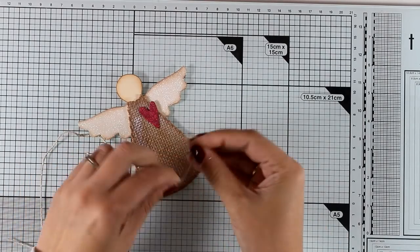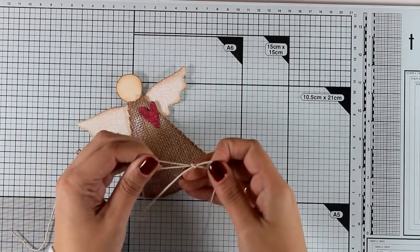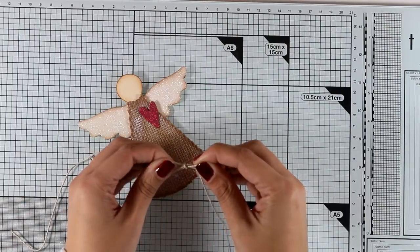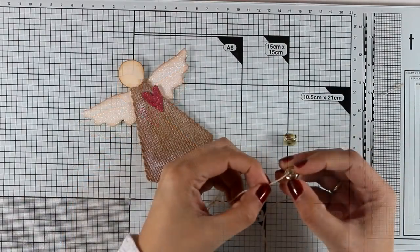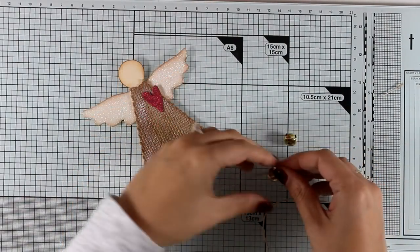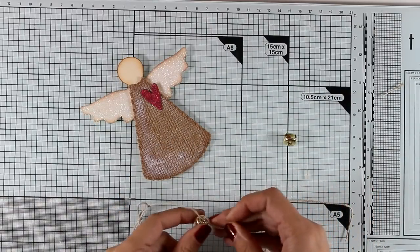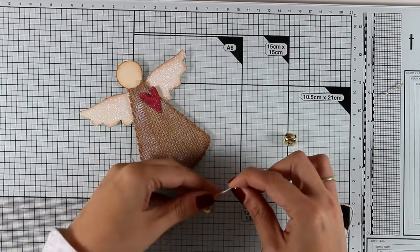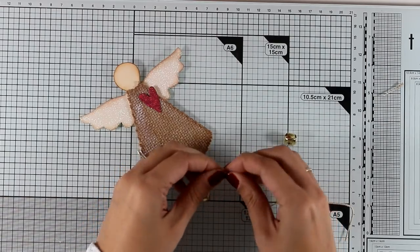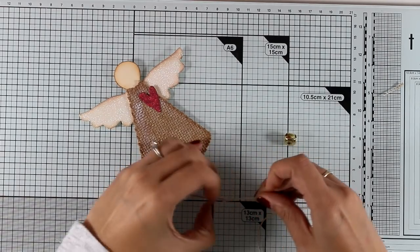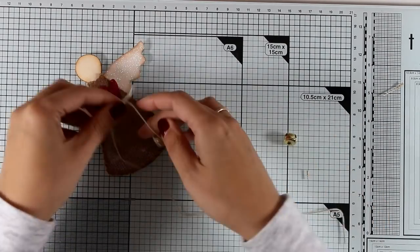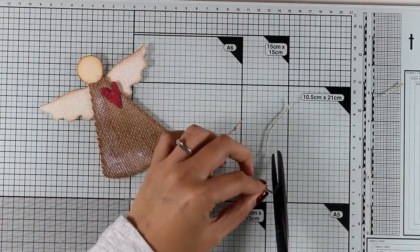To embellish my angel even more I am tying a little bow with this string. On both ends I'm going to thread a couple of jingle bells and I'm just going to tie them there so they can hang out of my angel.